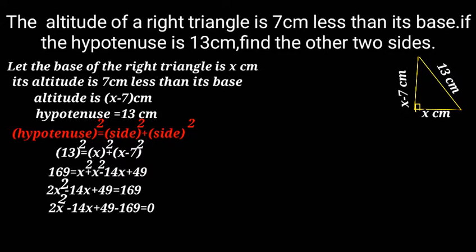2x squared minus 14x plus 49 minus 169 equals 0. That is equal to 2x squared minus 14x minus 120 equals 0, which simplifies to x squared minus 7x minus 60 equals 0.